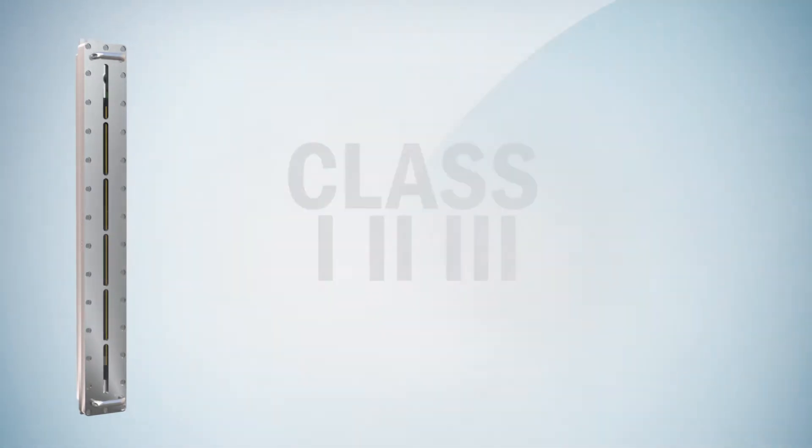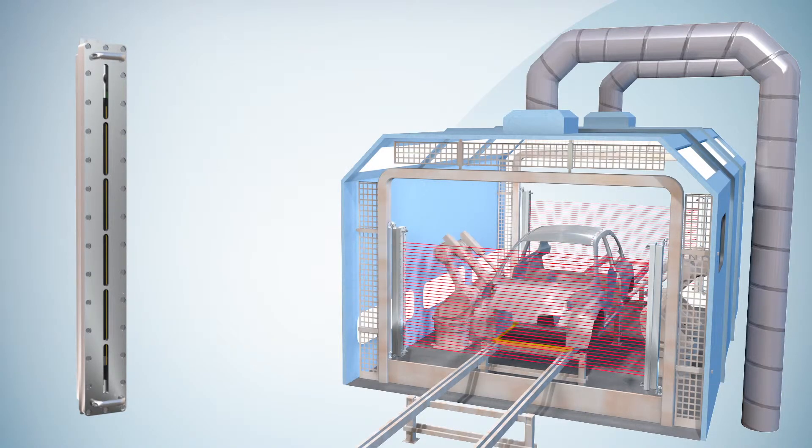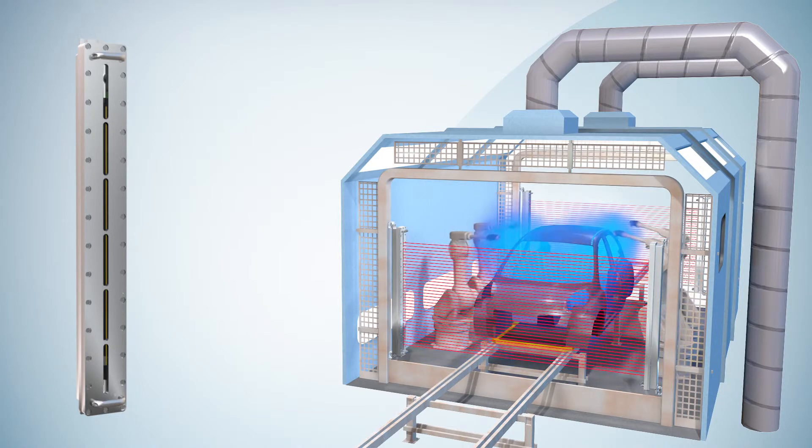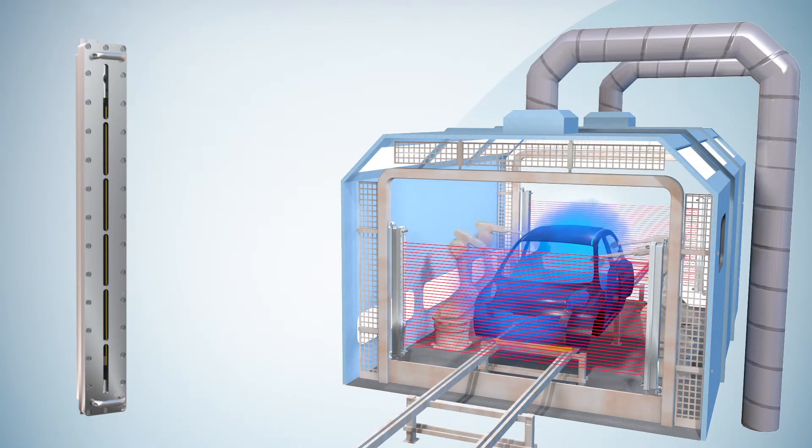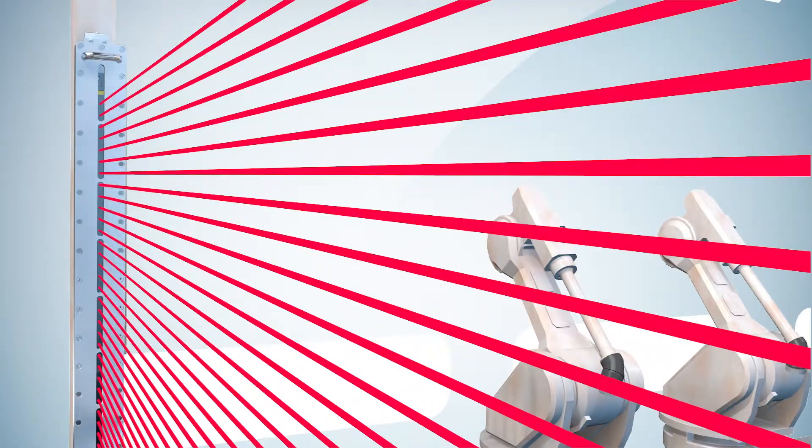In this paint booth example, safeguarding at the entrance and exit of the booth is needed to ensure no personnel can enter the hazardous area undetected. Explosion-proof safety light curtains are required due to the presence of flammable vapors from the painting process.